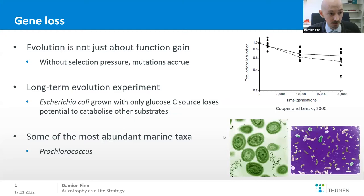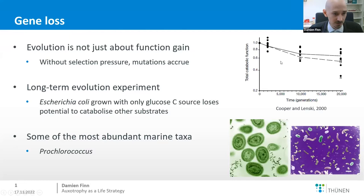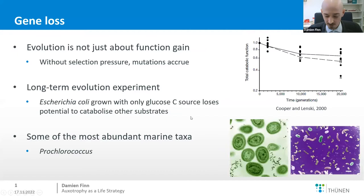We know from the long-term evolution experiment that if you successively grow E. coli in medium where glucose is the sole carbon source, then over time those strains will lose the capacity to catabolize other carbon substrates — they don't need it anymore. Going out into the wide blue ocean, we find that some of the most abundant marine taxa in the surface layer are also riddled with gene loss.